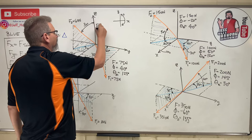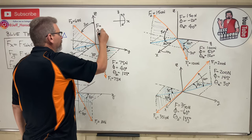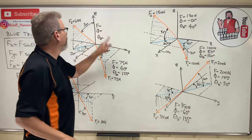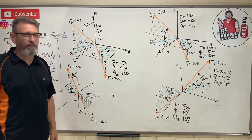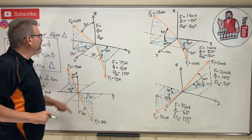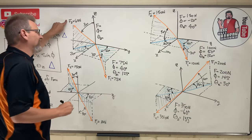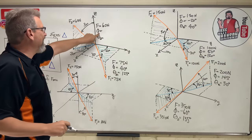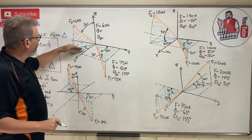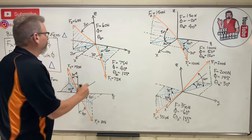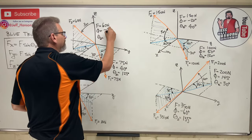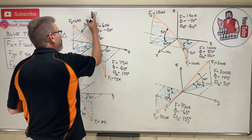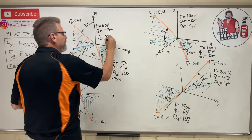F2: f equals, phi equals, theta_z equals. F2 is 60. What is phi? From here over — this is positive, that is negative — so phi is minus 20. And what is theta_z? Theta_z is given this time — from positive z down to the vector is 30 degrees. We've got two more to go, and after this there's no way you'll miss this on a test.